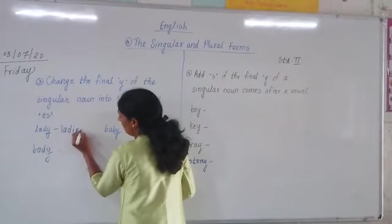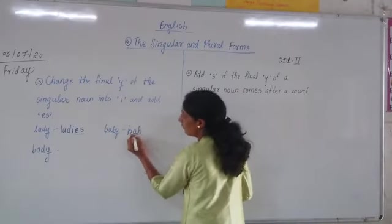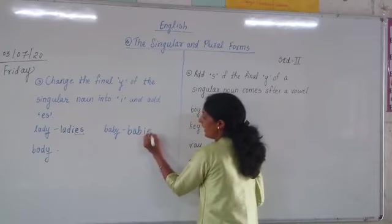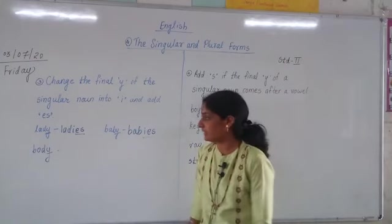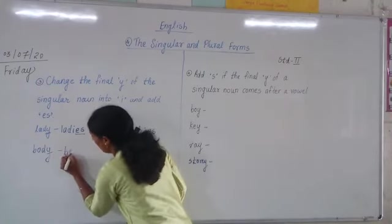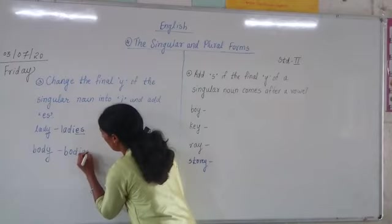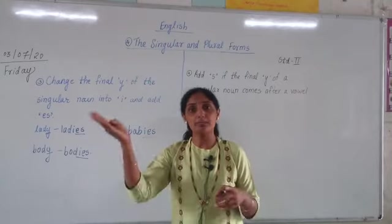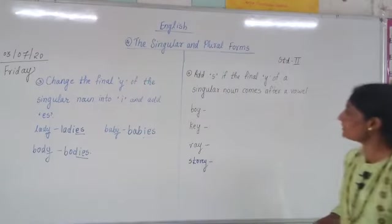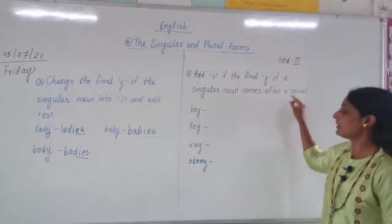For example, 'lady' — L-A-Y — we change 'Y' to 'I' and add 'ES'. 'Baby' — B-A-B-Y — changes to 'babies'. 'Body' — B-O-D-Y — we change 'Y' to 'I' and add 'ES', so 'body' becomes 'bodies'.